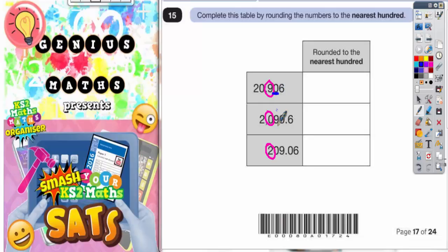Which would be the tens column - so zero tens, nine tens, zero tens. You always look at the digit after the one you're rounding to to help you decide whether to round up or down.